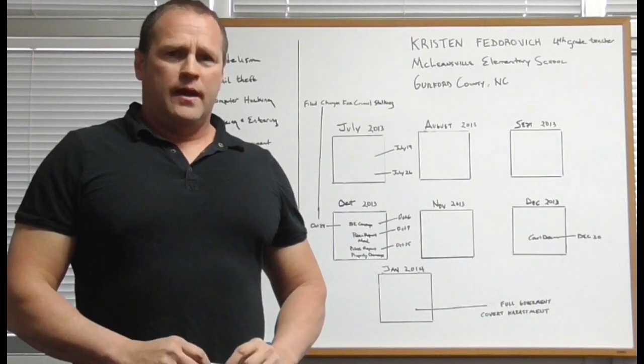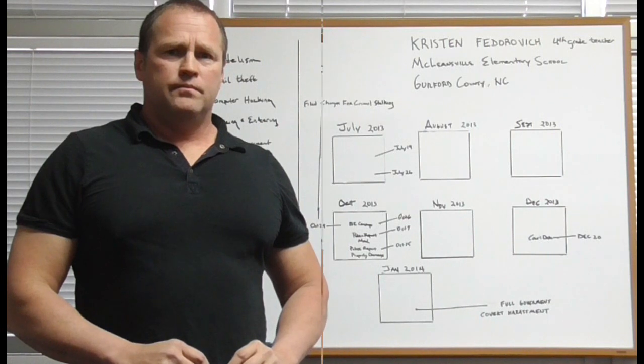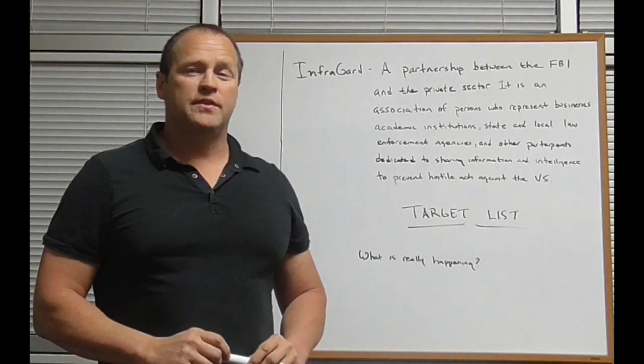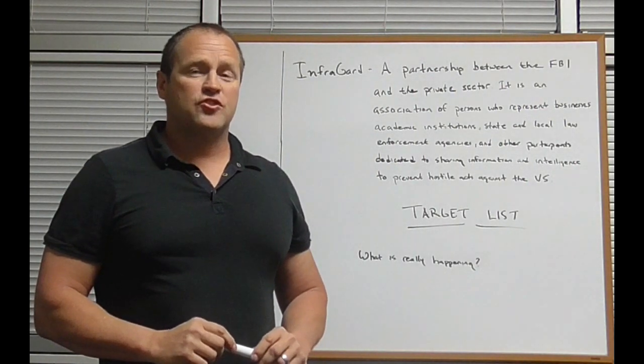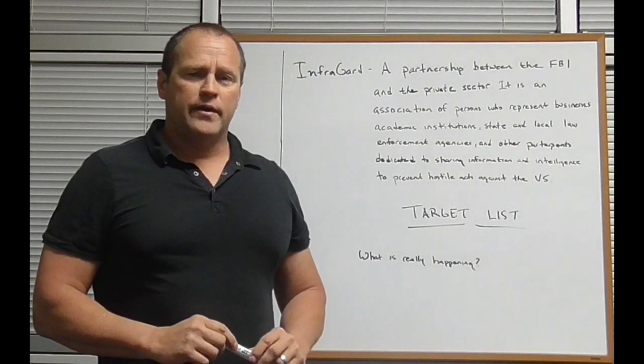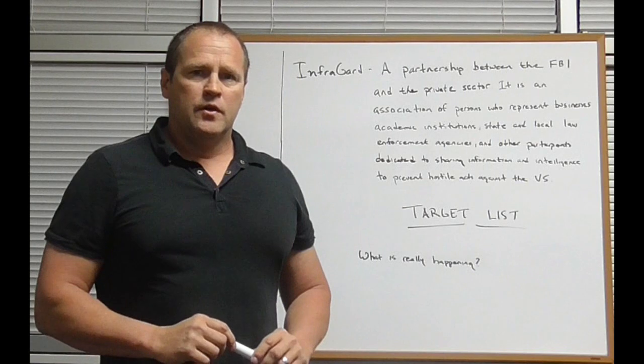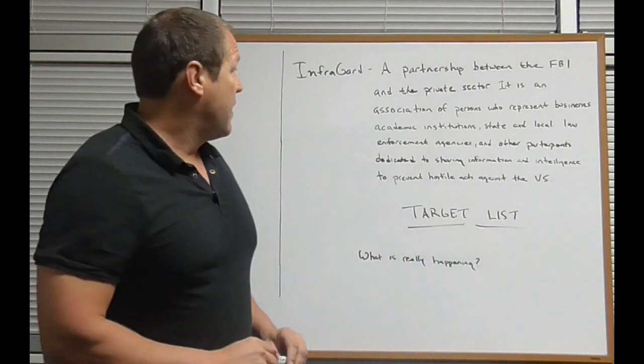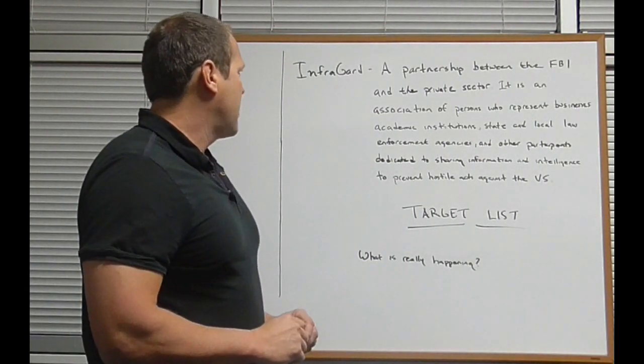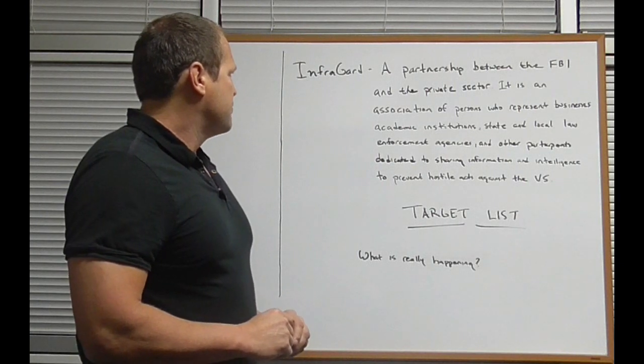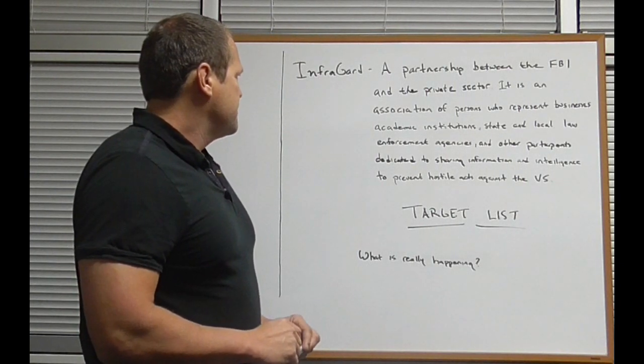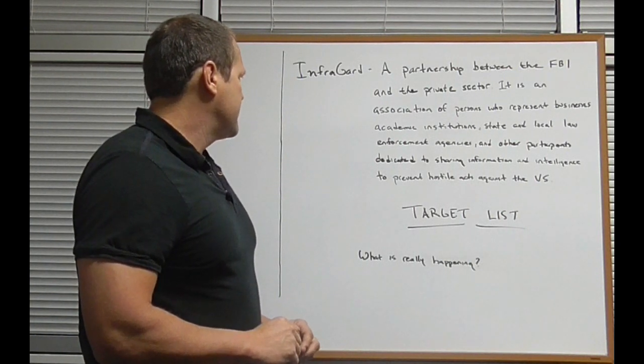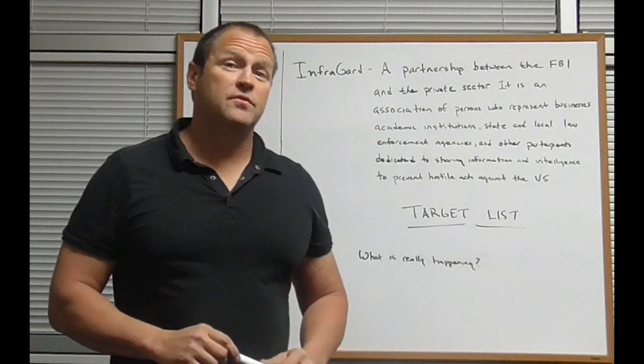Now, let's talk about the InfraGuard and how it is structured. The InfraGuard began in Cleveland, Ohio in 1996 and has since expanded to become a national level program with InfraGuard coordinators in each FBI field office. A simple way of looking at the InfraGuard is their miniature FBIs. The InfraGuard is defined as a partnership between the FBI and the private sector. It is an association of persons who represent businesses, academic institutions, state and local law enforcement agencies, and other participants dedicated to sharing information and intelligence to prevent hostile acts against the United States.